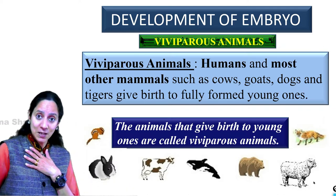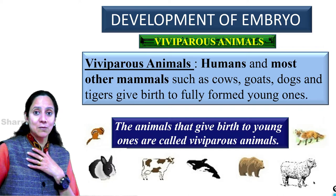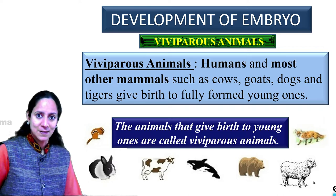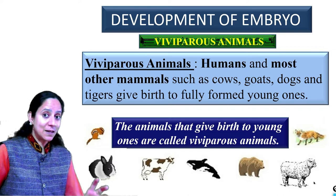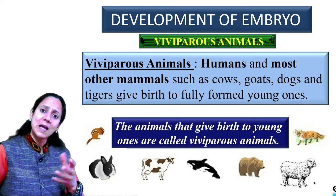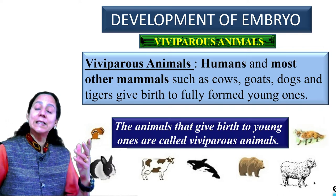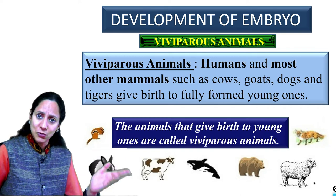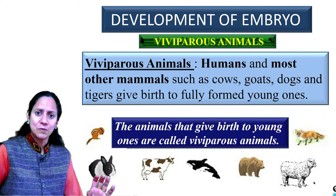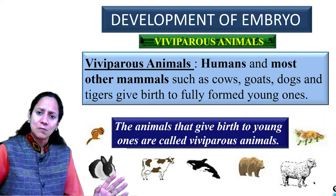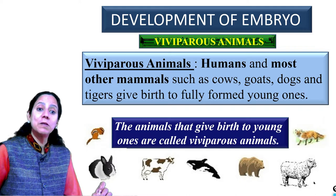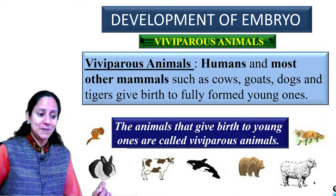Human beings give birth to young ones and are viviparous. Similarly, dogs, cats, tigers, and elephants also give birth to fully developed young ones, so they are also called viviparous animals.